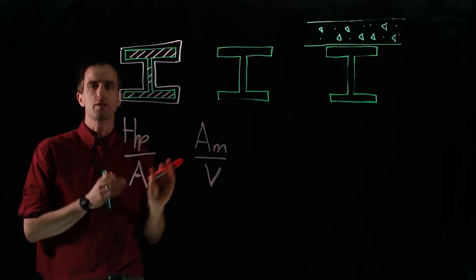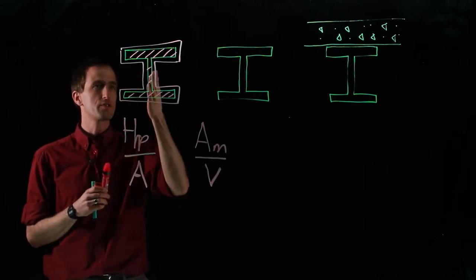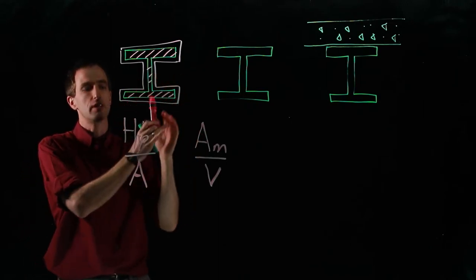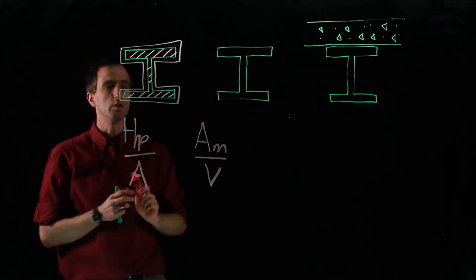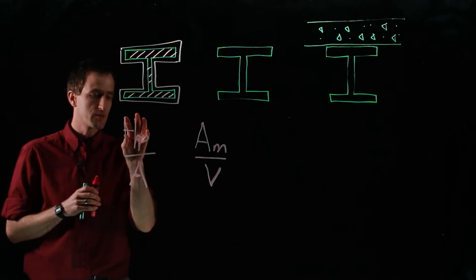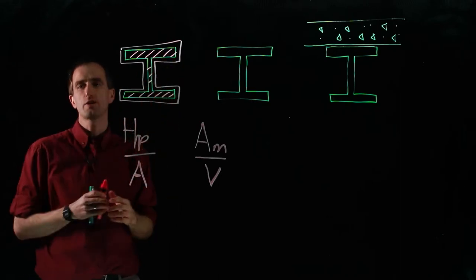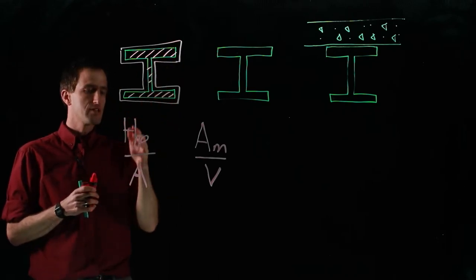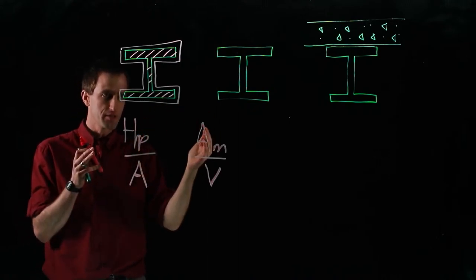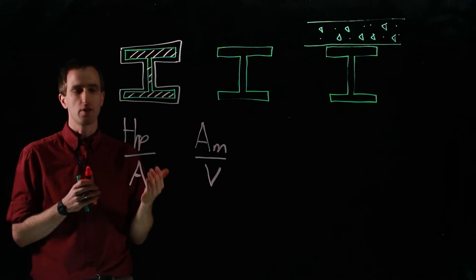If it's a uniform cross section it'll be identical, you'll get the exact same result. However, if for instance this is a cellular beam with holes in, or it's a tapered beam where there's a change in cross section over the length, then these two values will be different. We can try and manipulate this value, the heated perimeter and what our cross section is, because as our heated perimeter increases for constant area, our section will heat up faster.